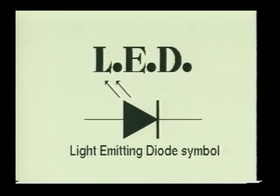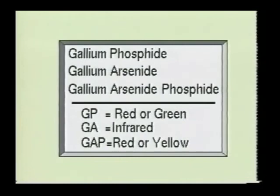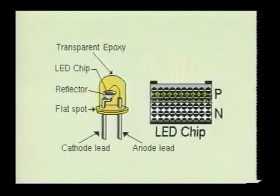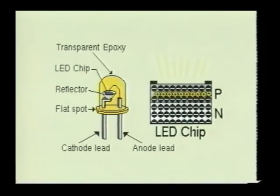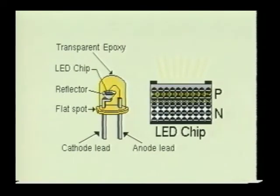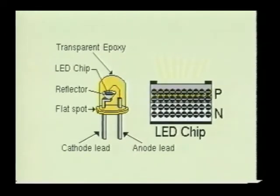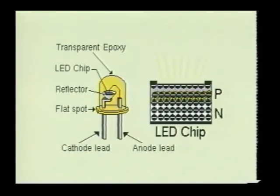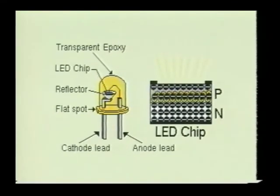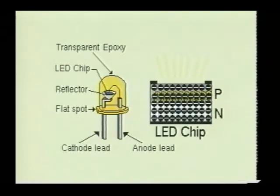Here we see the LED, or light-emitting diode. It is made from gallium phosphide, gallium arsenide, and gallium arsenide phosphide. The gallium phosphide will emit a red or green emission. The gallium arsenide will emit an infrared radiation, and the gallium arsenide phosphide will emit a red or yellow emission. When the electrons from the N-material cross the junction of a forward-biased LED, they combine with the holes in the P-material. This recombination of charge carriers causes the LED to radiate energy in the form of light. Since the PN material is encased in a transparent casing, the PN junction becomes the light source. The relatively large amounts of current consumed by the LED are their only major disadvantage.